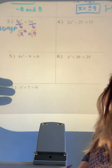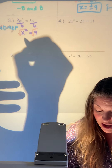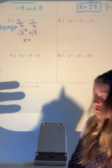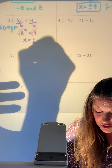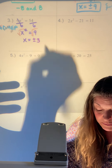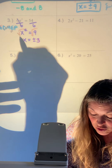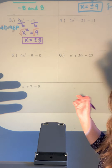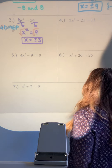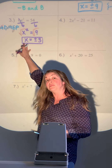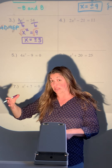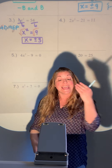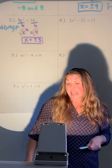Square root both sides so we just have x. The square root of 9 is 3 — but don't forget plus or minus. Any time you solve an equation and you're square rooting, remember there are two answers: the positive one and the negative one.